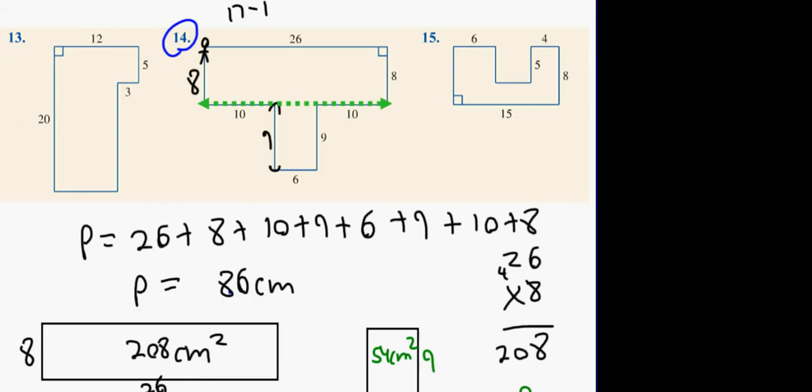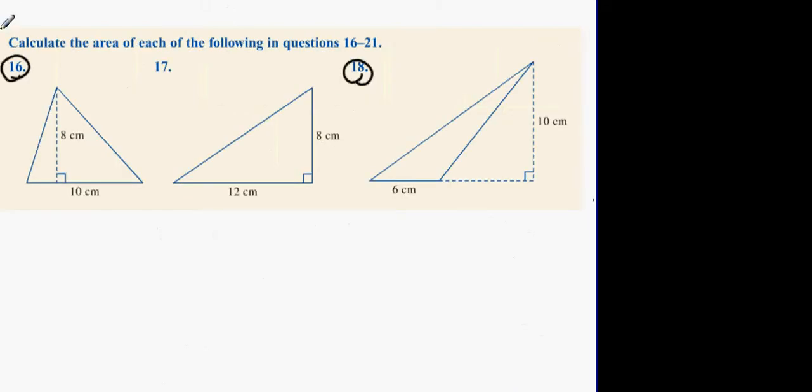Okay. Next one, number 16. Going to go for Luke. What's the area of a triangle, Luke? The formula. Multiply the base by the height and then half the answer. Yeah. So it's going to be a half. What's the base of this one? 10. Half 10 times 8. Which is 40. 40 centimeters squared.